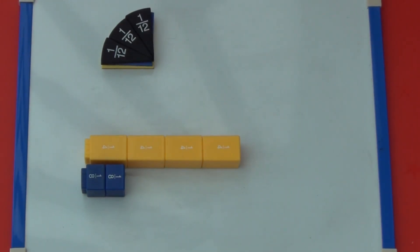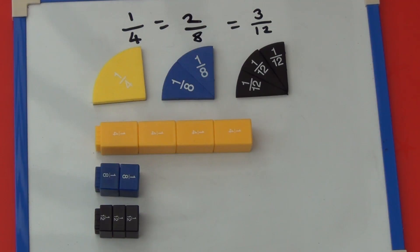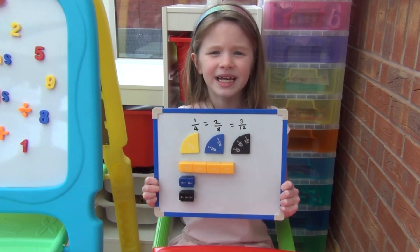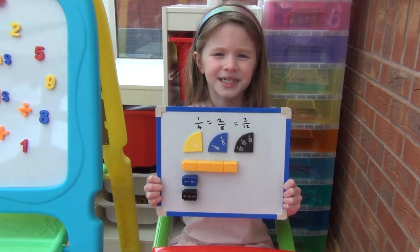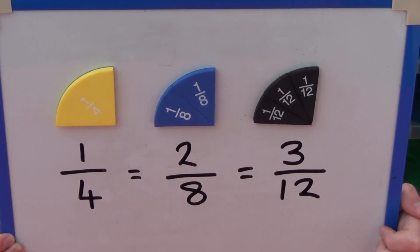Again we can do the same with the cubes. If we look at some of the fractions which are equivalent to one quarter, we can see that one quarter equals two eights and also three twelfths. If we look at the numerator and the denominator, we can see a link — the numerator is always exactly one quarter of the denominator.